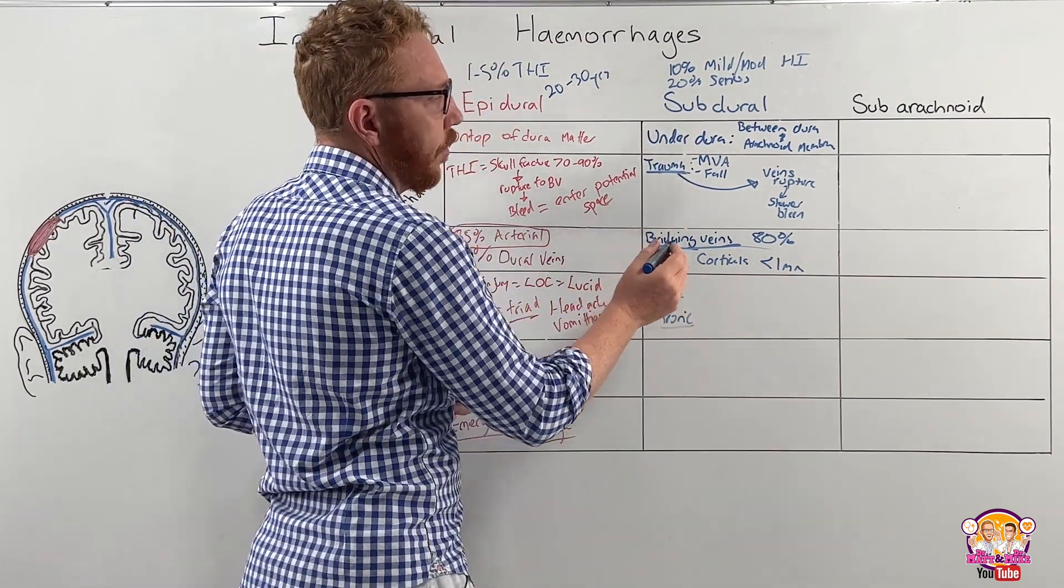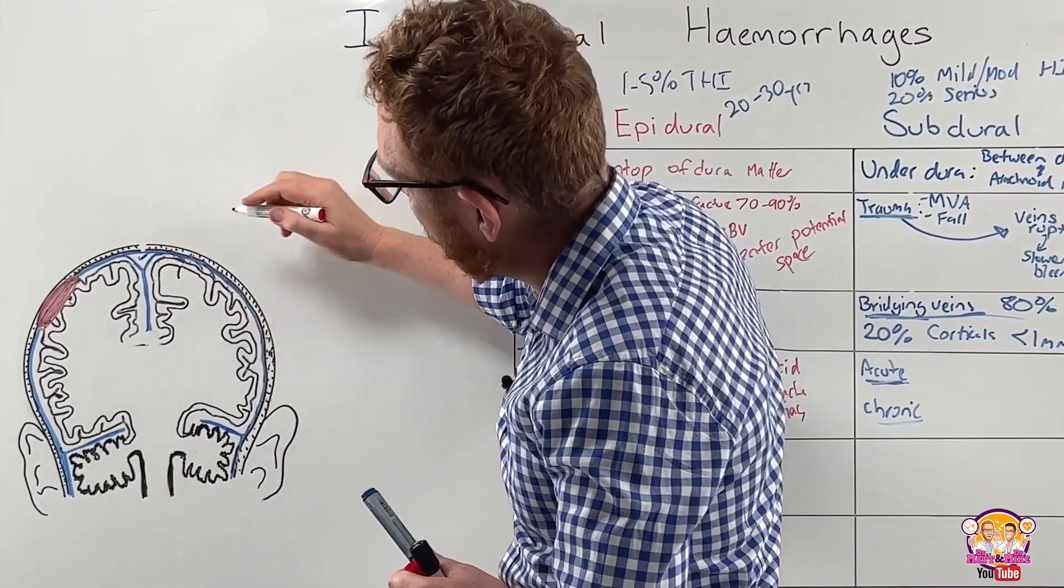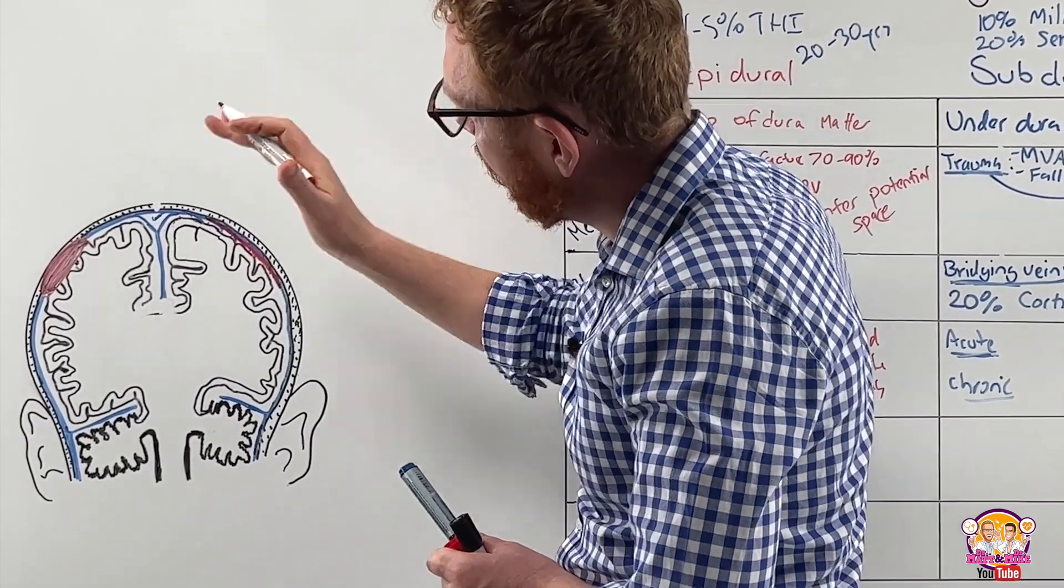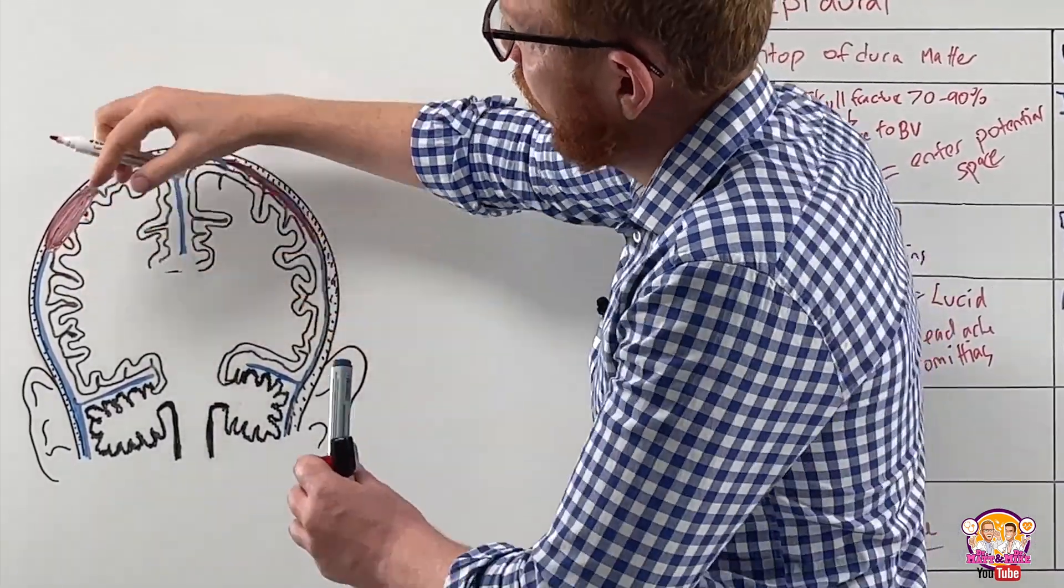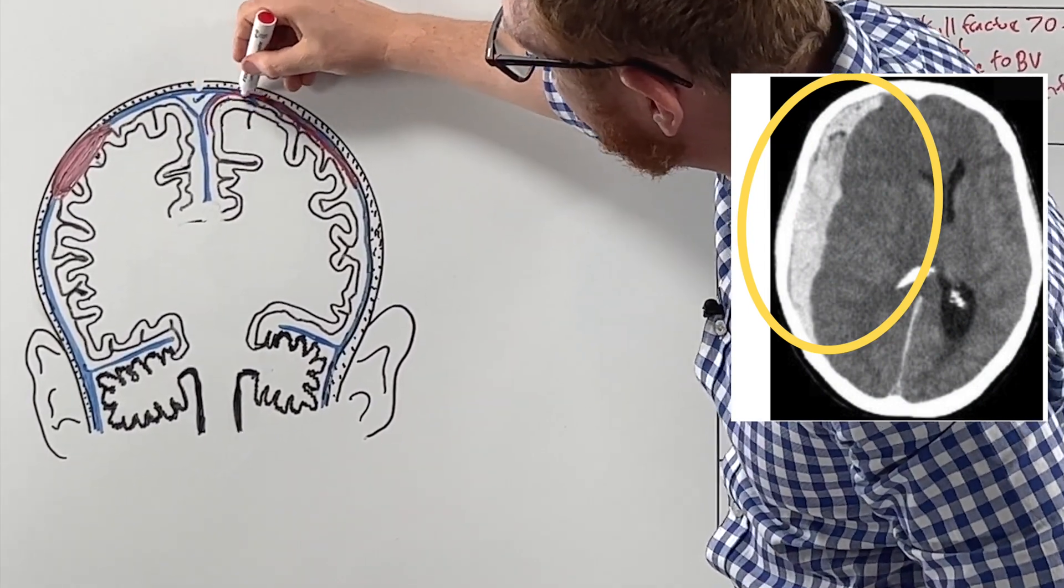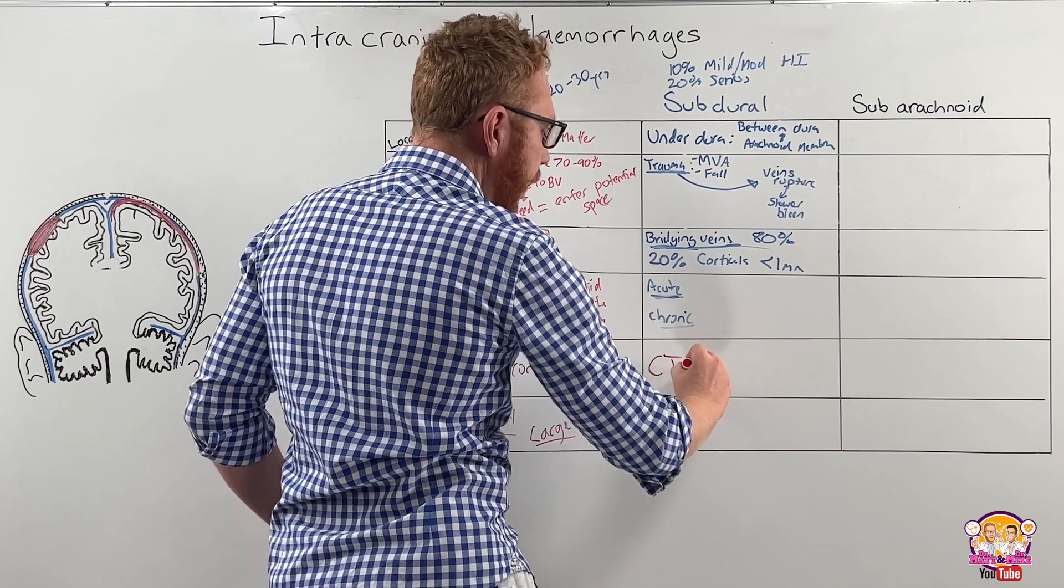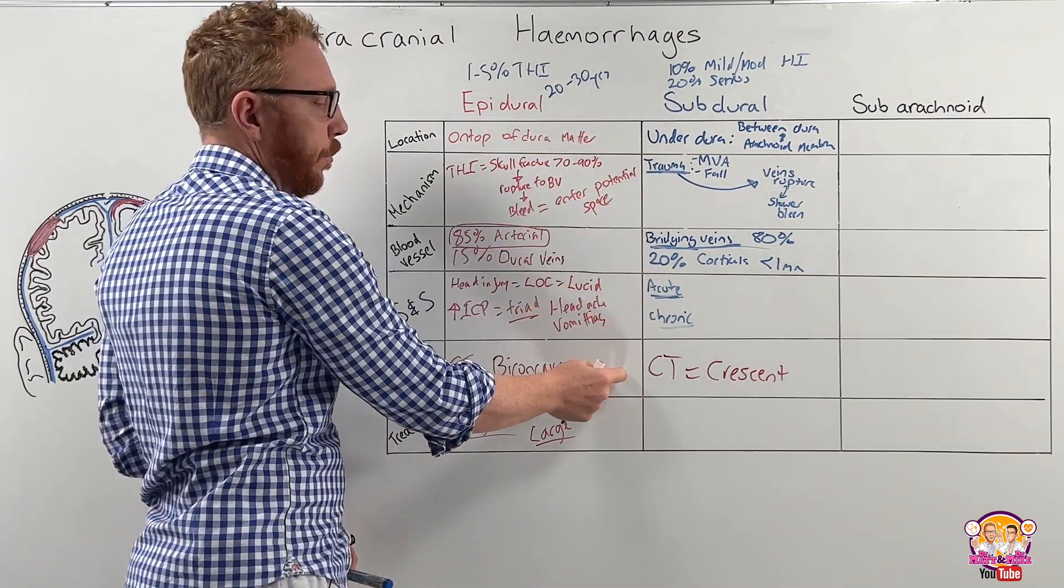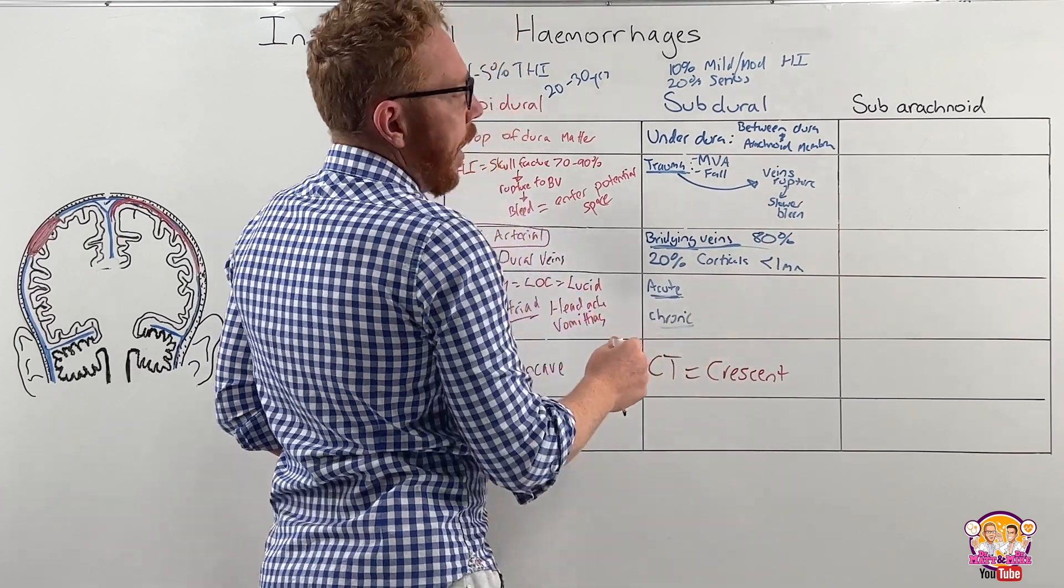So in the acute, what happens is we have the bleed and it will start to accumulate. It's going to be between the arachnoid membrane and the lower part of the dura. And that's going to start to bleed into here and take up space. Again, it's a potential space between the dura and the arachnoid membrane. It's going to start to accumulate. The difference is this is restricted between the skull and the dura and not going to be able to expand past suture points, whereas this one can. So it can actually go in a further region, which makes it actually look crescent shaped. So on the CT, it will look crescent shaped.